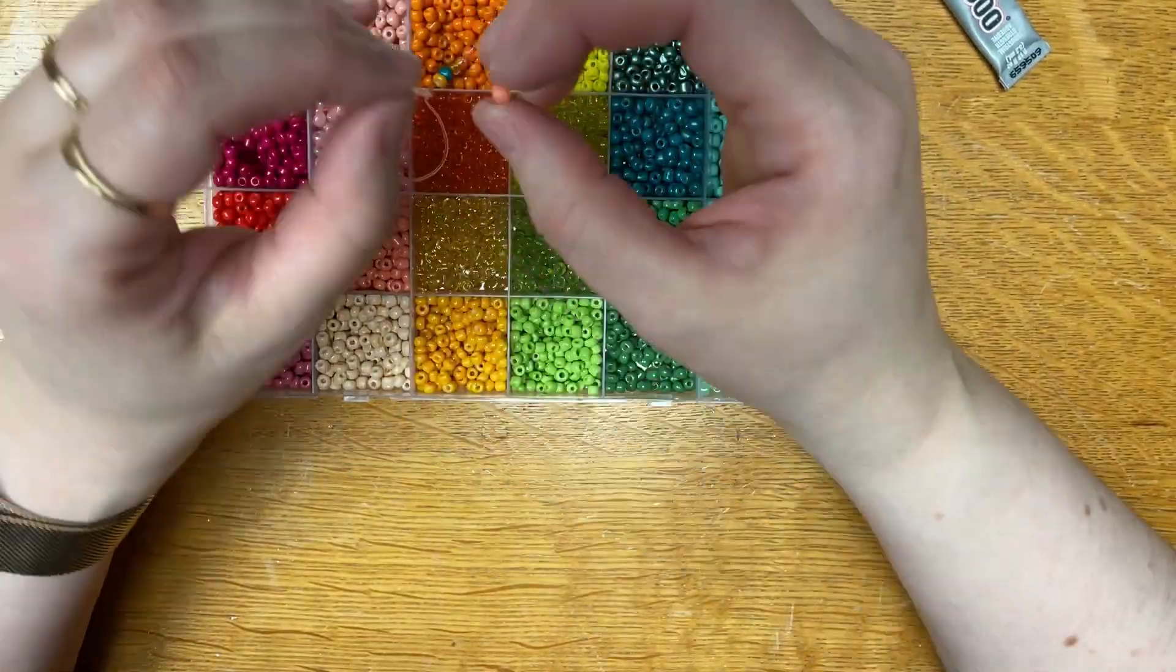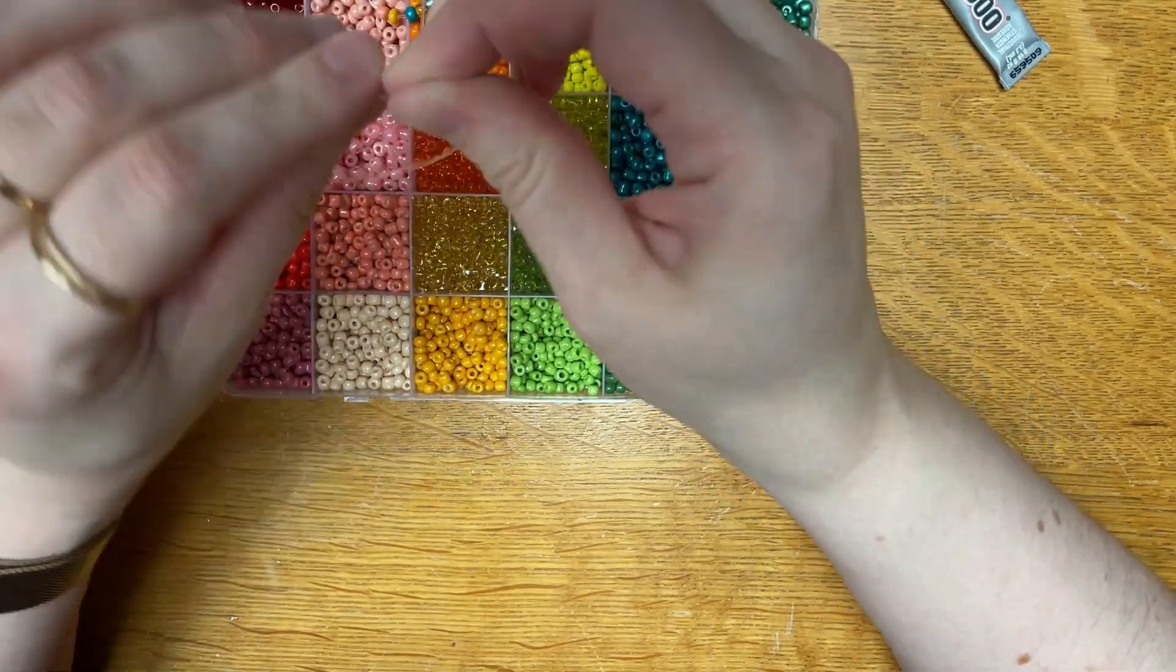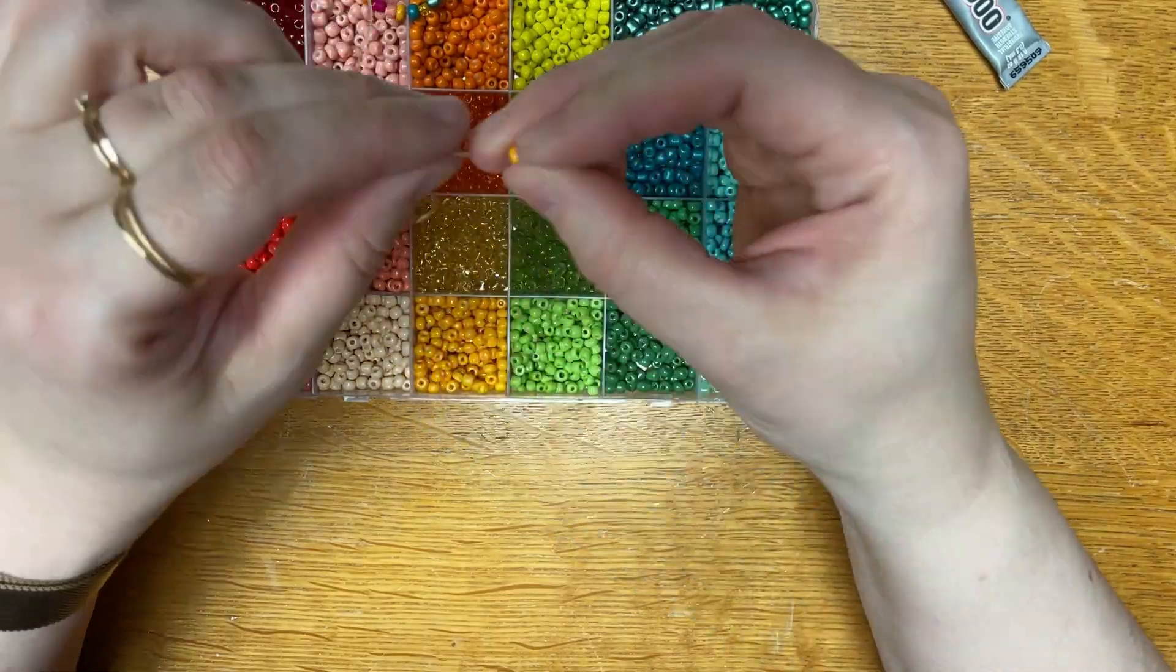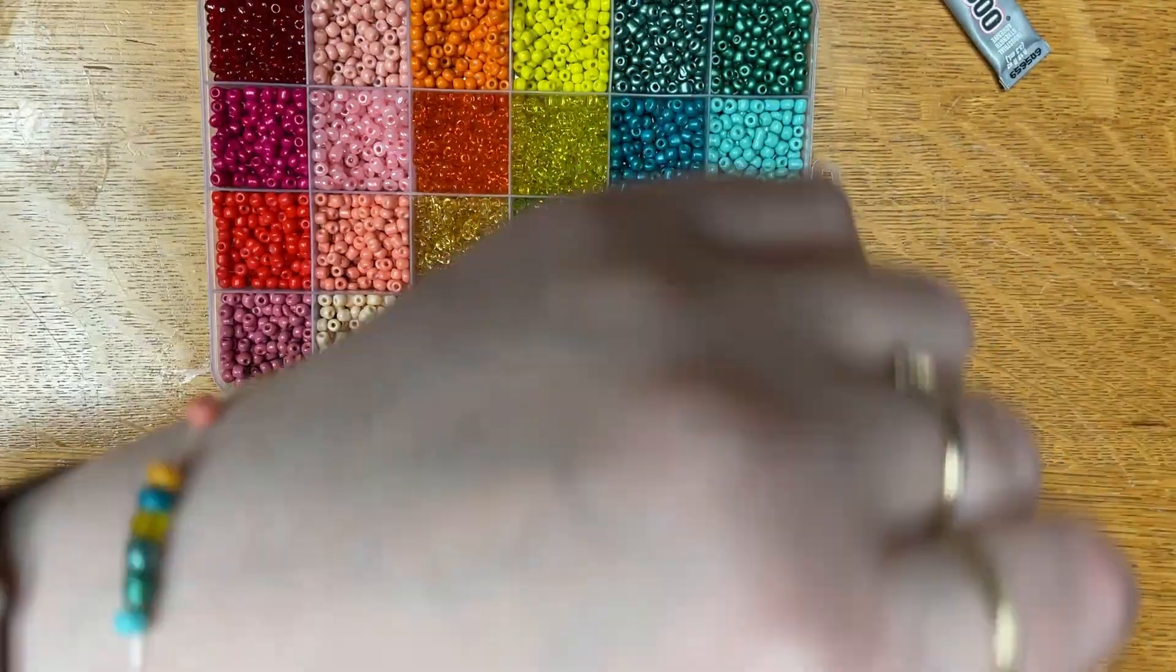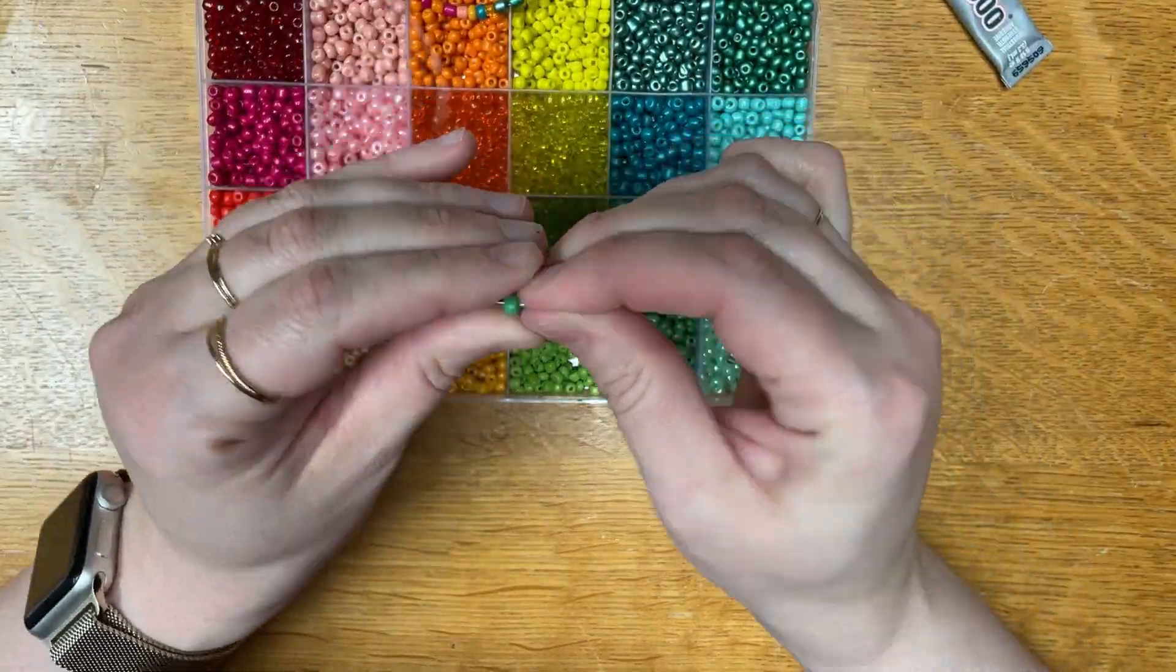What we're doing that's different with this, which is why I'm showing you this in the first place, is the glue. Glue is your friend with these. I used to think that I could tie a knot and call it a day, but the knot will loosen and my bracelet would fall apart. That's just part of life.